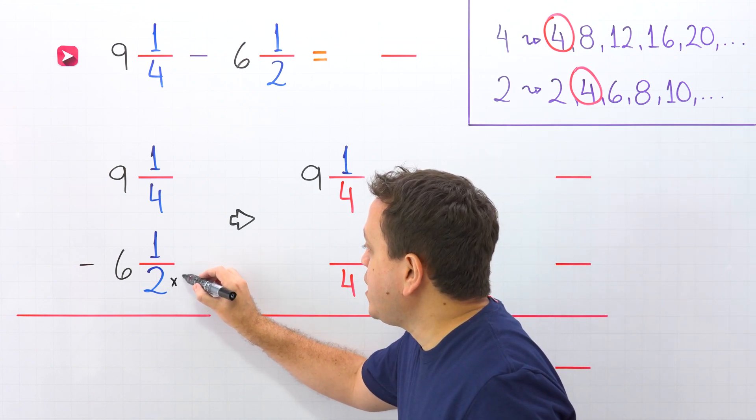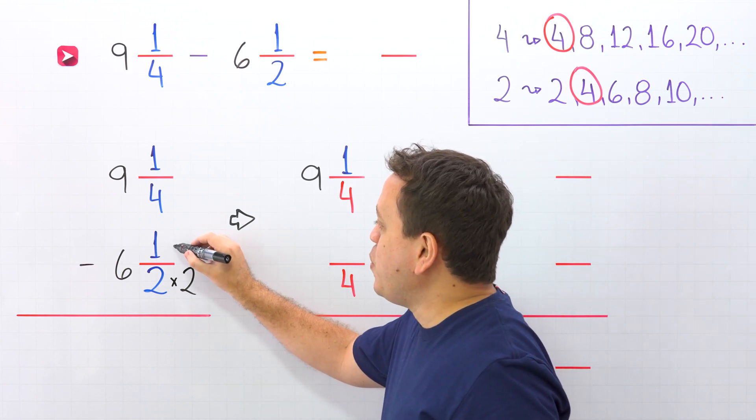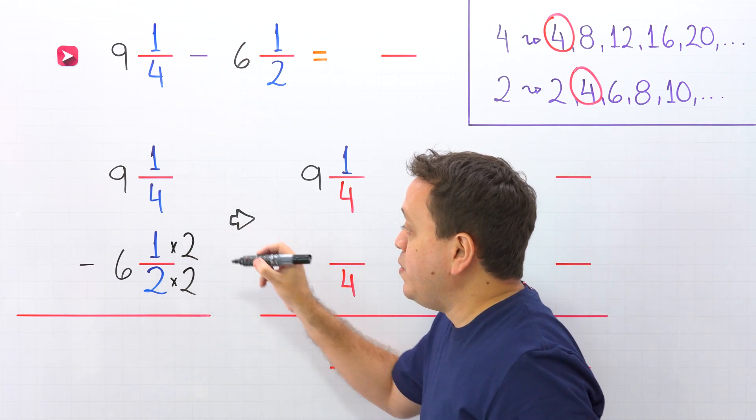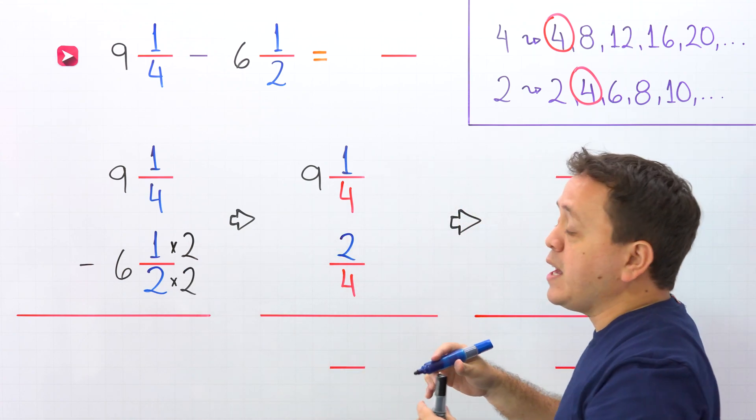By 2, that is correct, because 2 times 2 give us 4. Whatever we do to the bottom, we must do to the top, and 1 times 2 give us 2. 1 half and 2 fourths are equivalent fractions.